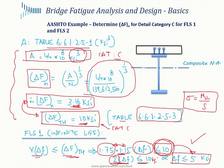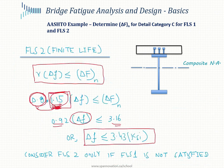For infinite fatigue life, if the nominal stress is below 5 ksi, the check is complete. Otherwise, you must calculate the number of cycles and verify stress against the FLS 2 capacity, ensuring the bridge has sufficient fatigue life over its design lifetime.